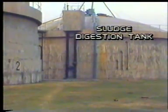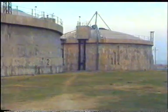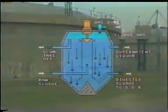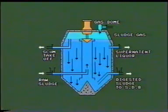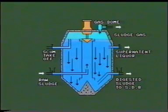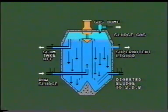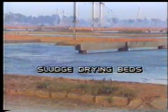Sludge is passed on to the sludge digestion tank for anaerobic decomposition of organic matter, a process known as sludge digestion. Raw sludge is pumped into the center of the tank for a detention period of about four weeks. Gases are released through a dome at the top, while supernatant liquor and scum are removed from the tank. Digested sludge settles down and passes on to sludge drying beds. Dried sludge, which is rich in nitrogen, is used as manure.